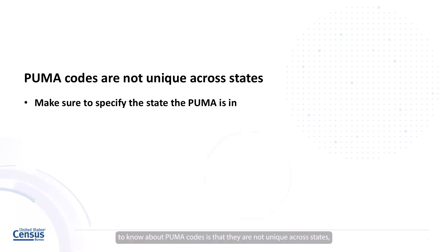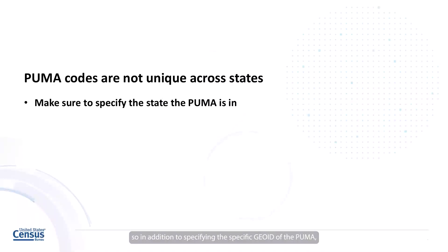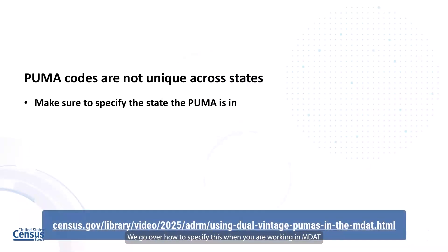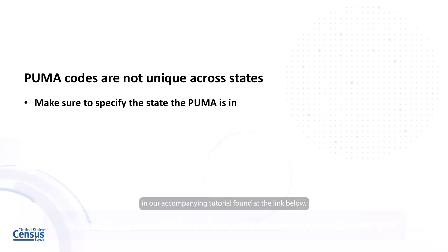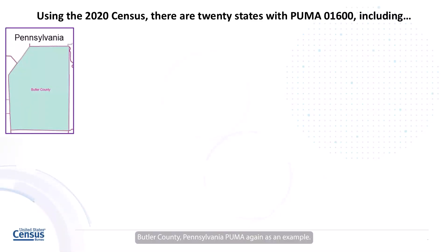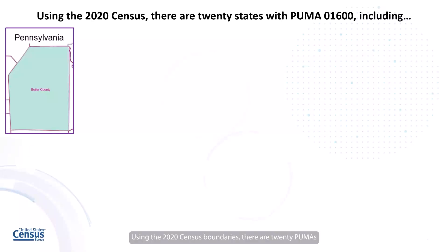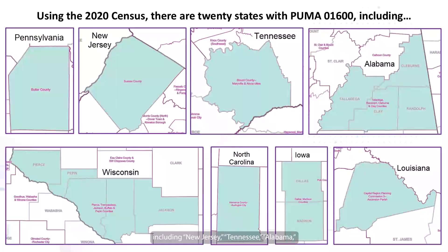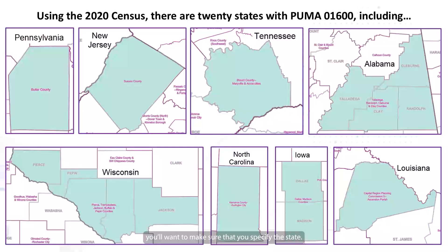Another important piece of information to know about PUMA codes is that they are not unique across states. So in addition to specifying the specific GOID of the PUMA, you'll also need to specify the state that you want it for. We go over how to specify this when working in MDAT in our accompanying tutorial. For example, the GOID for the Butler County, Pennsylvania PUMA is 01600. Using the 2020 census boundaries, there are 20 PUMAs across different states that also have a GOID of 01600, including New Jersey, Tennessee, Alabama, Wisconsin, North Carolina, Iowa, and Louisiana. So to make sure you are getting data for the right one, you'll want to specify the state.